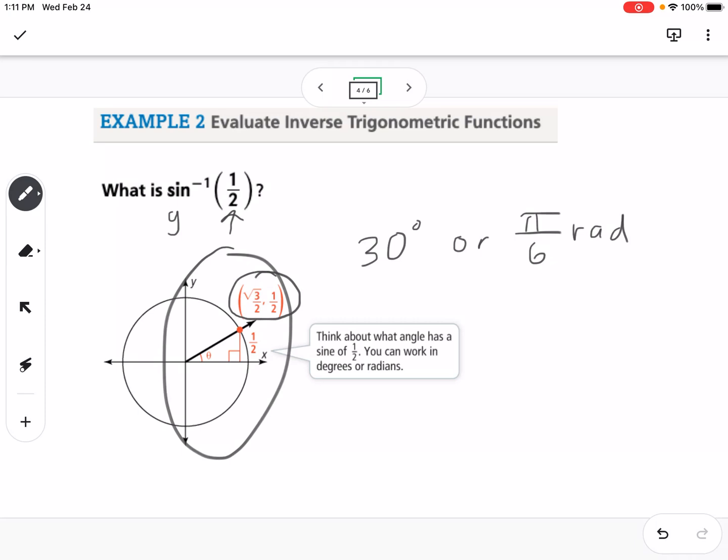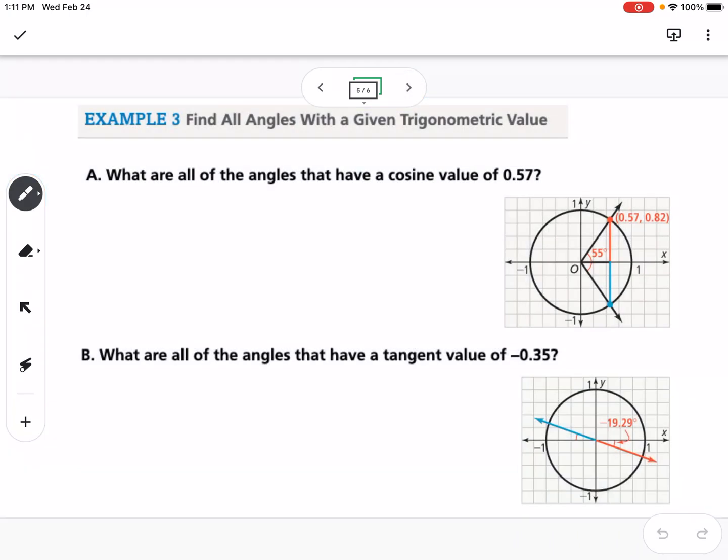So that would be the answer. We'd say the inverse sine of a half is 30 degrees or pi over 6 radians. Okay, so now we're finding all angles with a given trigonometric value. So it says what are all of the angles that have a cosine of 0.57?